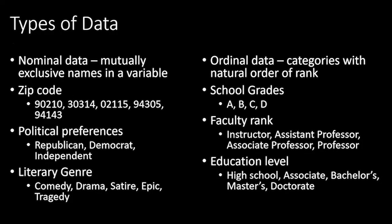The first type of data to understand is nominal data — these are names of a variable and the names don't have any real value. For example, zip codes like 90210, 30314, 02115, 94305, 94143 have no intrinsic meaning. Other examples are political preferences like Republican, Democrat, Independent, or literary genres like comedy, drama, satire, epic, and tragedy — all completely nominal data.